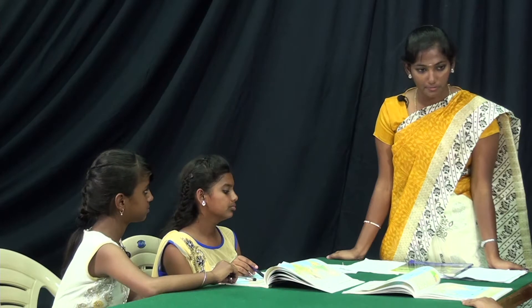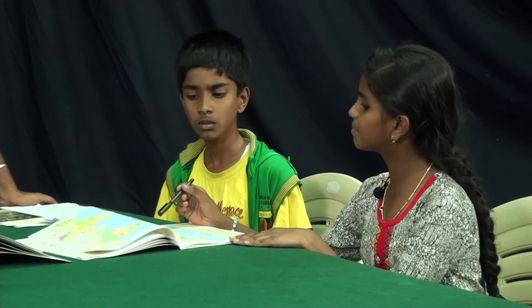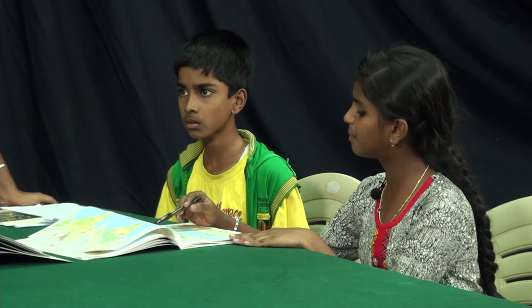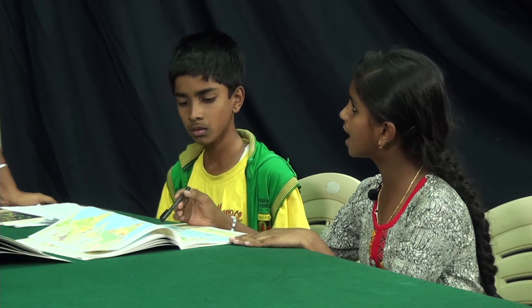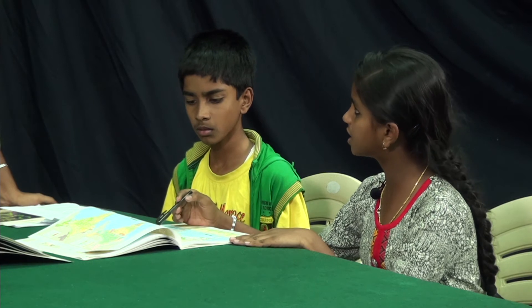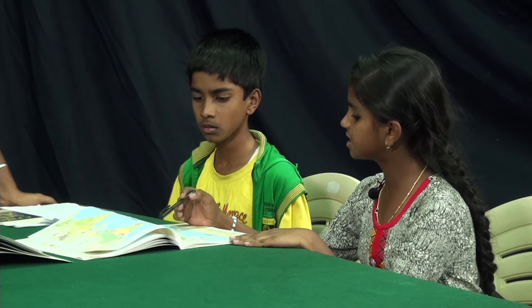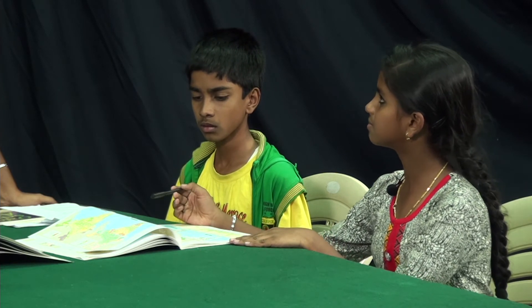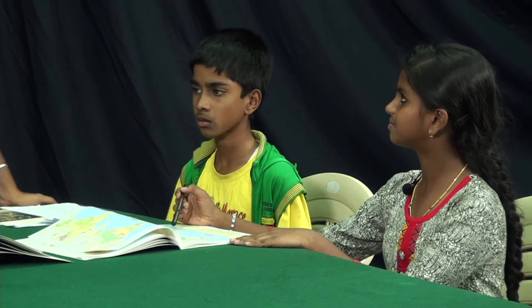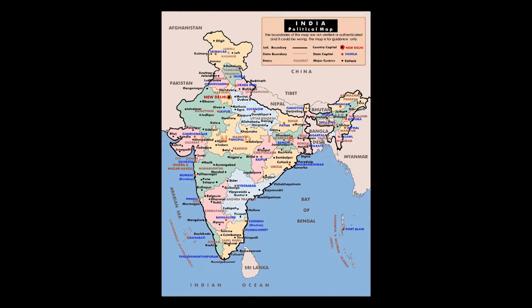Why are there only solar power plants and not hydel power plants? It is a hot desert so we can produce power using solar energy. To produce hydel energy we need water, and Rajasthan has scarcity of water and there are not many dams. Good. Now we will study using the Indian political map — so take out your Indian political map.